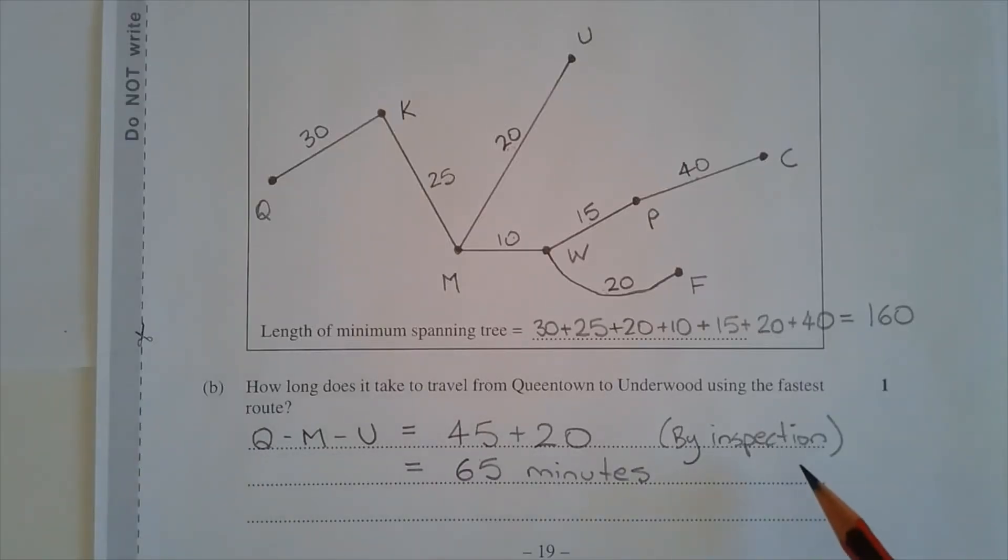Part B was answered by inspection and it does not necessarily have anything to do with Part A. It's important to note that the minimum spanning tree does not necessarily give the minimum path or the shortest path between any two vertices.